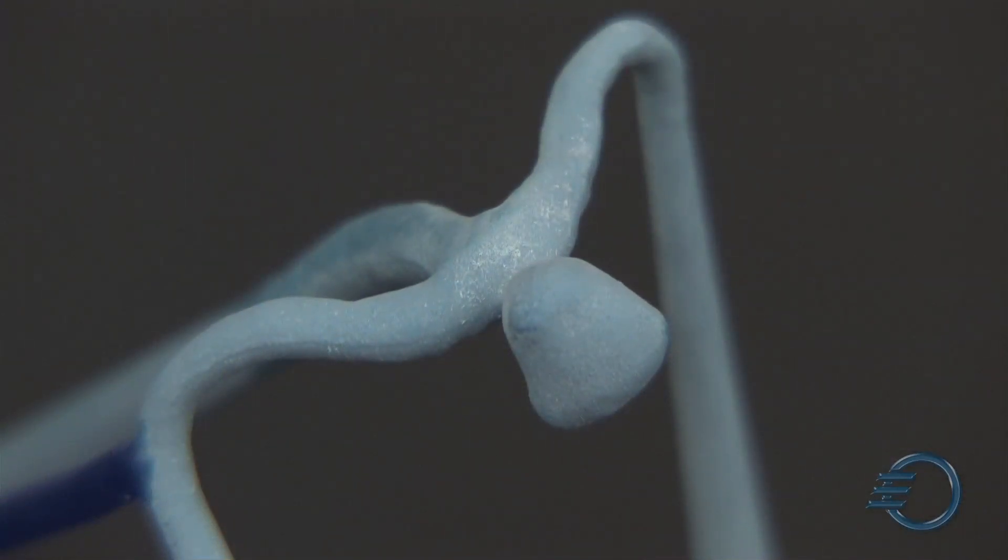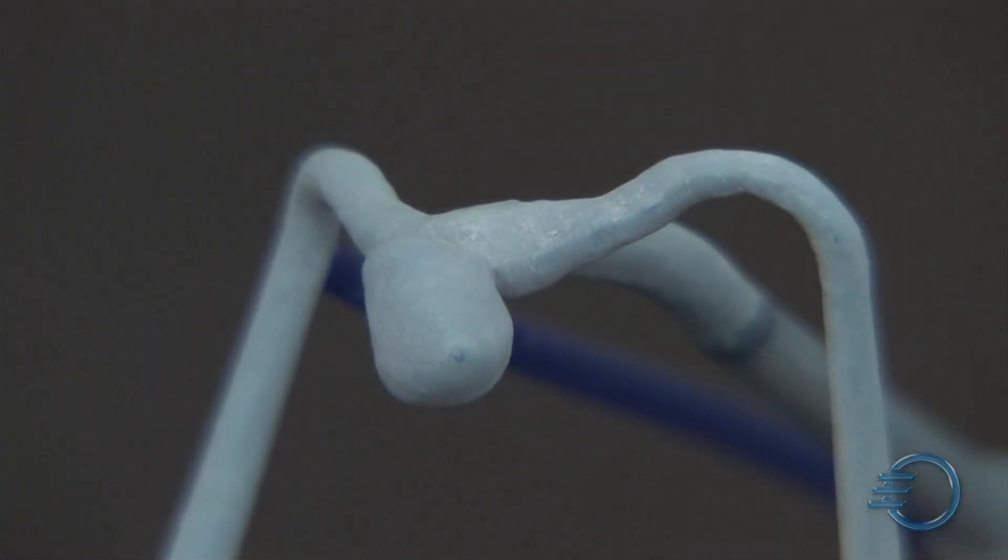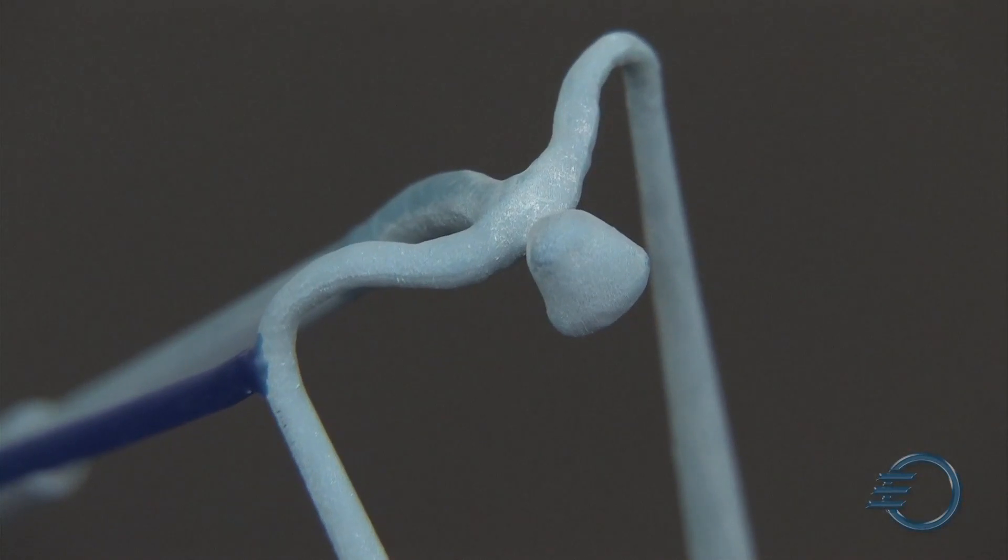An aneurysm is a balloon-like sack that forms off of the side of a blood vessel. We think of our blood vessels as tubes, and if there's a weak point, then a balloon can come out of that tube and expand out from the vessel where it shouldn't be. That's what an aneurysm is.